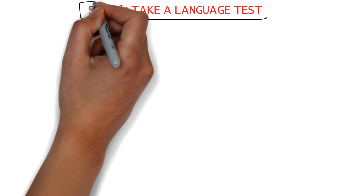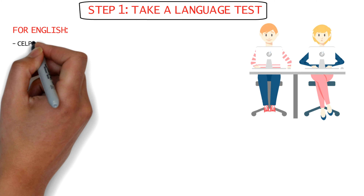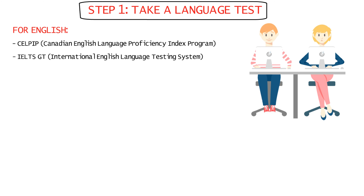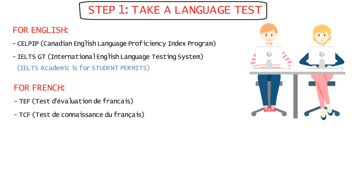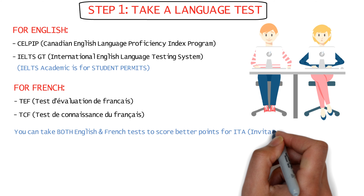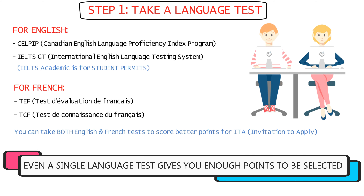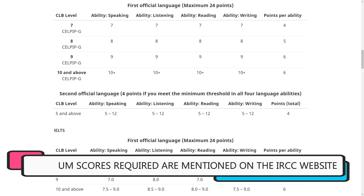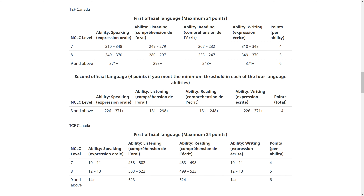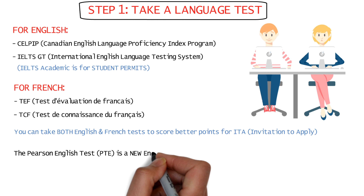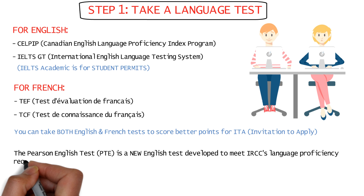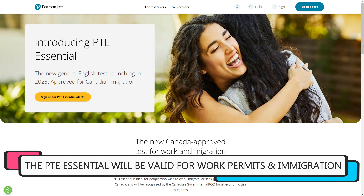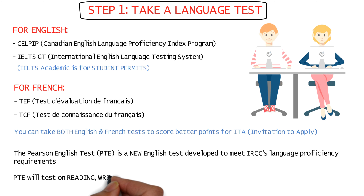Now let's come to the first step, which is taking a language test. For English, you have to take the CELPIP or IELTS General Training, as IELTS Academic is for study visas. For French, you can take the TEF or TCF. You can choose to take both English and French tests if you want to score better, but you can get selected with even a single test, so if you know just English or just French that will also suffice. The scores you'll need for each test are mentioned on the IRCC website — make sure that you meet or exceed the minimum scores. The Pearson English Test or PTE is a new English test developed to meet IRCC's language proficiency requirements, and like the other tests it covers reading, writing, listening, and speaking.